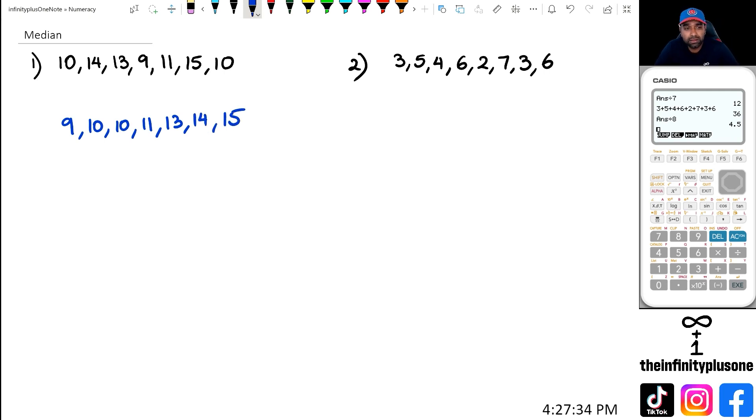Now we want to try and find the middle number for this particular set of numbers. When you have an odd number of numbers, it's actually very easy to find the middle. If I actually start from this one end here, and this end here, and if I start working towards the middle, this is the first number from the front, first number from the back, second number from the front, second number from the back, third number, third number, and then the fourth number. So you can actually say median is equal to 11.